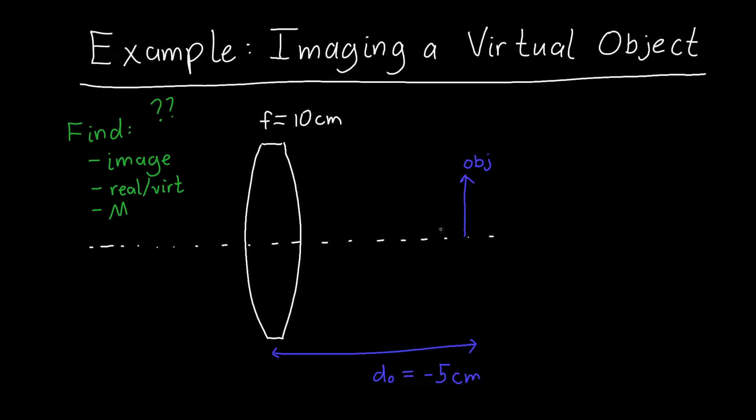Virtual objects often happen when I'm in a multi-lens system, so there might have been a couple lenses over here to the left that we just can't see. What a virtual object is, is those previous lenses sent out some rays that if this new lens weren't there, those rays would have converged at this object. That's all a virtual object means.